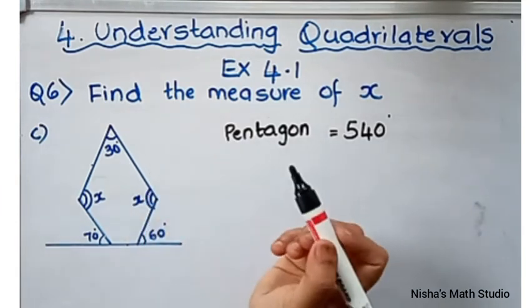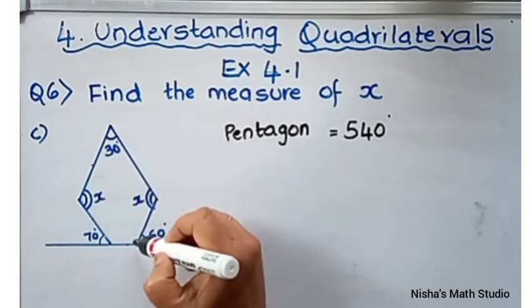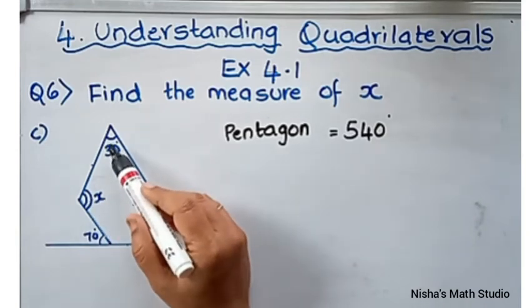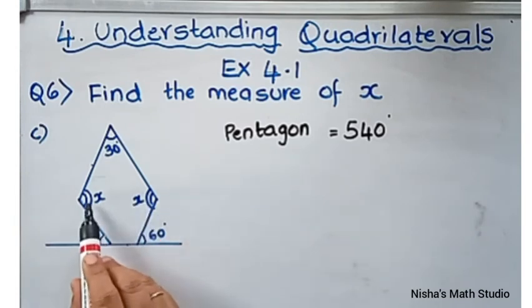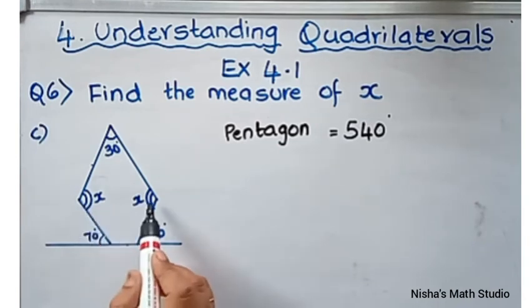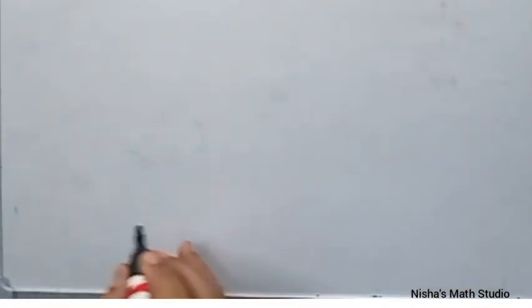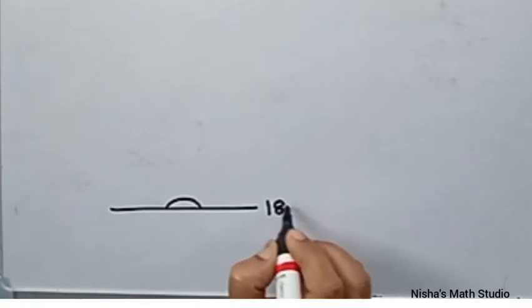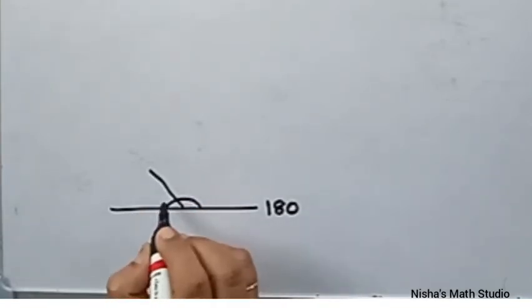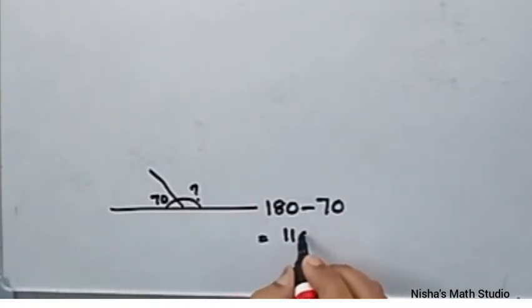So for the pentagon we need 5 angles, of which 2 are specified as x — meaning both have the same measure. Only one angle is given as 30 degrees. To find the other two interior angles, we use linear pairs. One straight line is 180 degrees, so if the exterior angle is 70 degrees, the interior angle will be 180 minus 70, which equals 110 degrees.